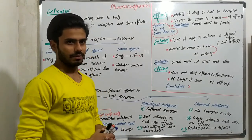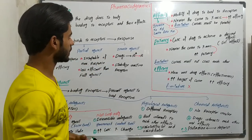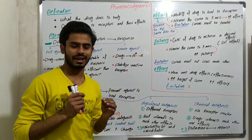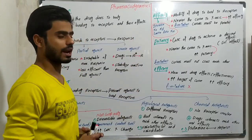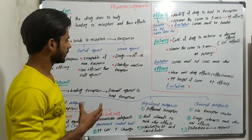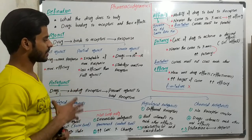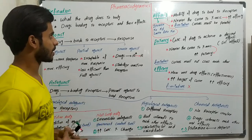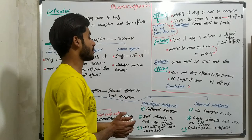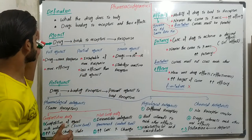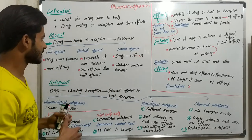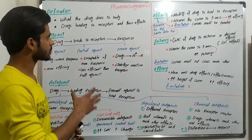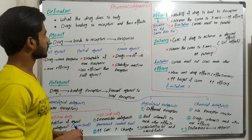Hi guys, my name is Damir Amar. As you know, we were discussing the general principles of pharmacology. The first chapter was about pharmacokinetics, and now we discuss pharmacodynamics. In this lecture we will see some general definitions and concepts so we can start the pharmacodynamics chapter. The important terms we must know are agonist, antagonist, affinity, potency, and efficacy.